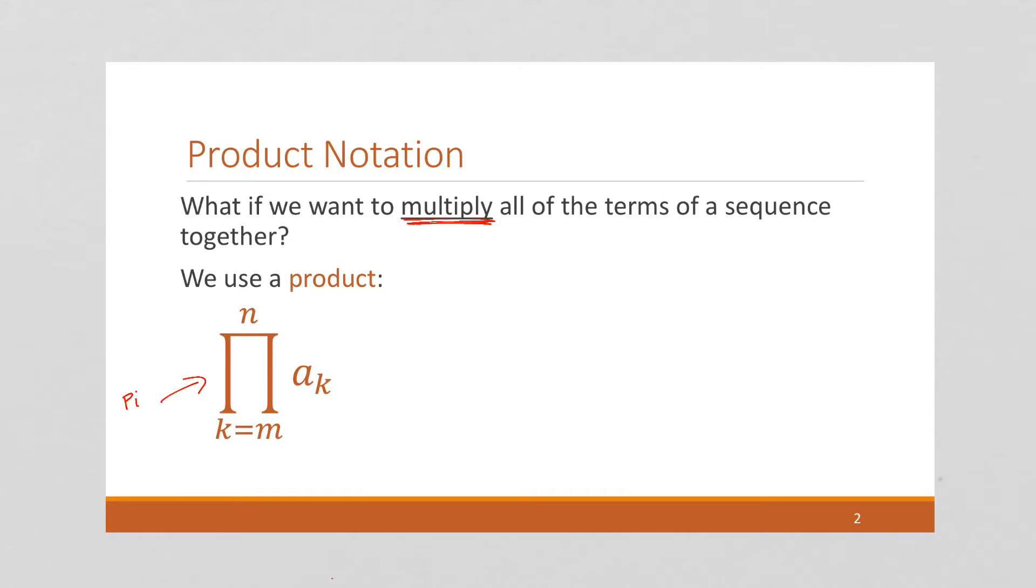And we have, just like with summations, we have a lower bound. This is our lower bound. So this is going to start with A sub M. The index is M, the lower bound. And here we have an upper bound.